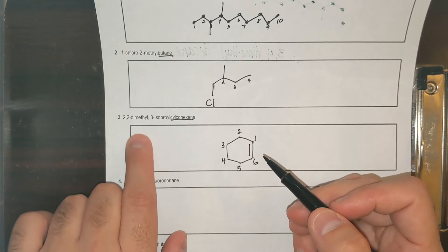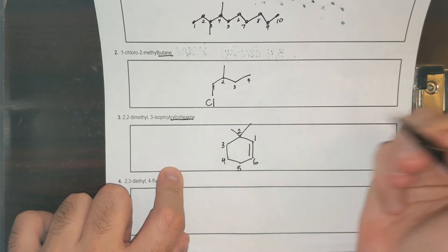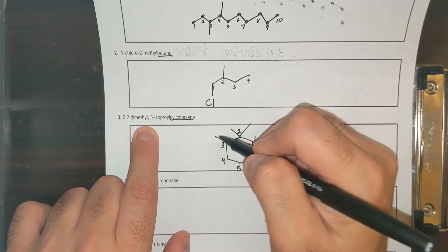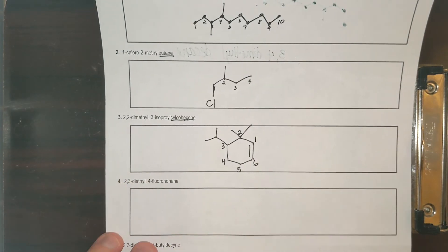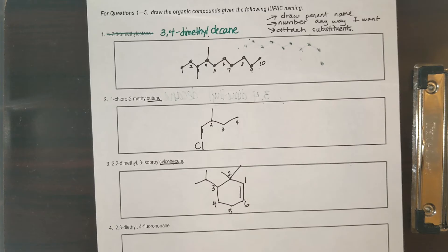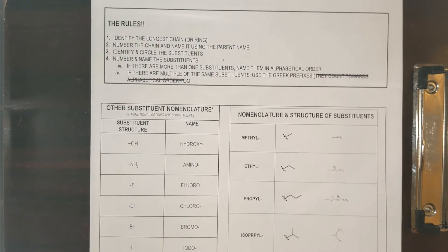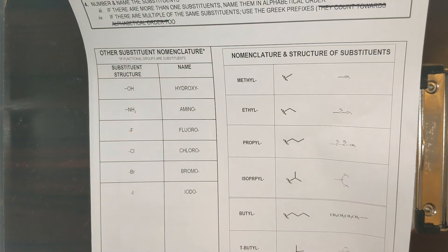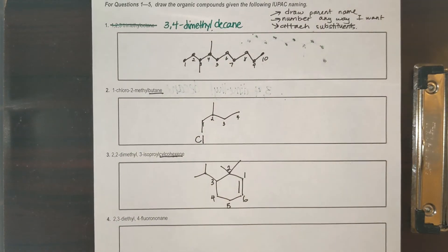And so now it says 2,2-dimethyl, one, two. I have 2,2-dimethyl. 3-isopropyl. That is what isopropyl looks like. And if you need a refresher, on page 21 I actually typed in and put all of the substituents. So here's methyl, ethyl, we did isopropyl, here's your chloro.